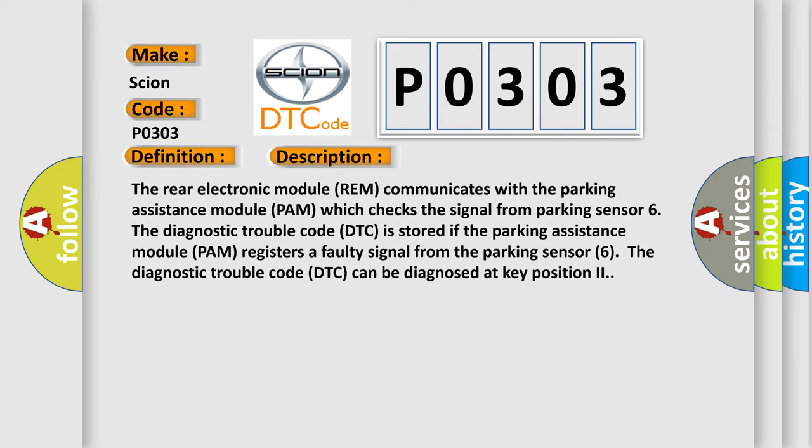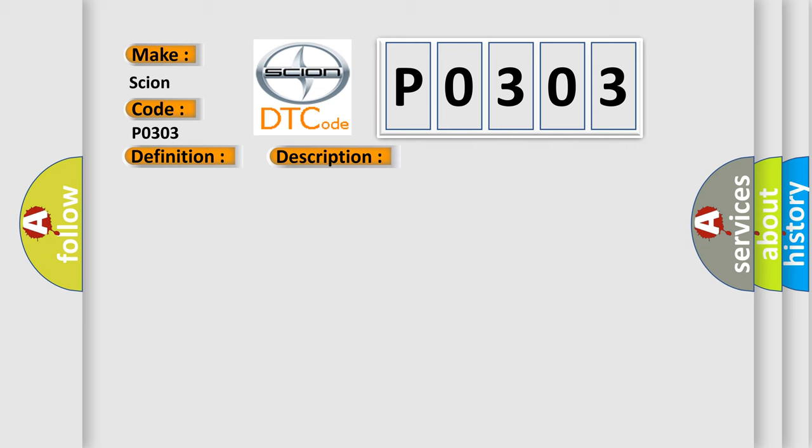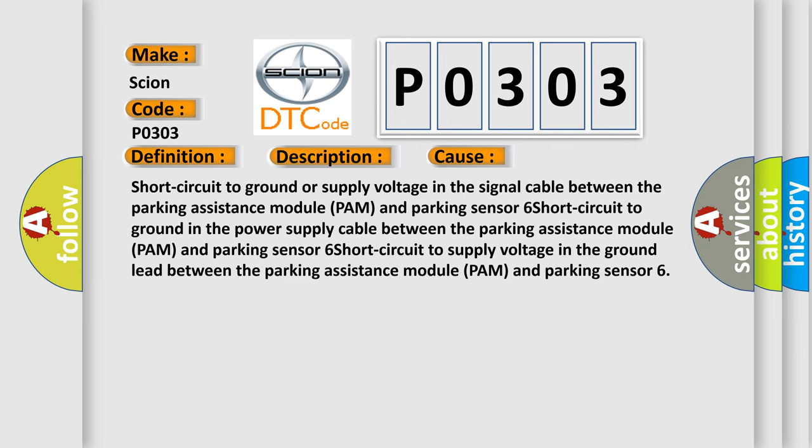This diagnostic error occurs most often in these cases: Short circuit to ground or supply voltage in the signal cable between the parking assistance module (PAM) and parking sensor 6. Short circuit to ground in the power supply cable between the PAM and parking sensor 6. Short circuit to supply voltage in the ground lead between the PAM and parking sensor 6.